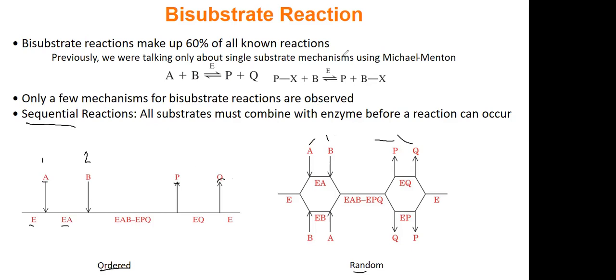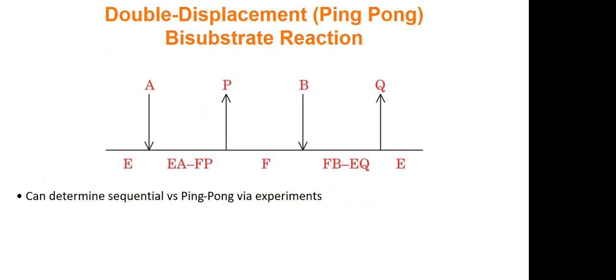So sequential, both substrates have to bind. If it's ordered, they have to follow a pattern, a set pattern or set order. If it's random, they can bind and come off in any combination.